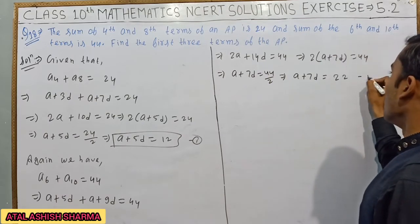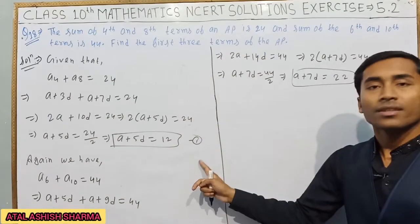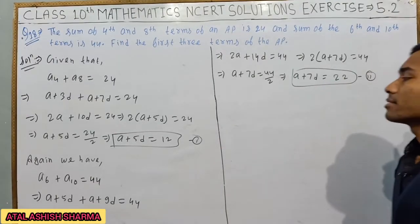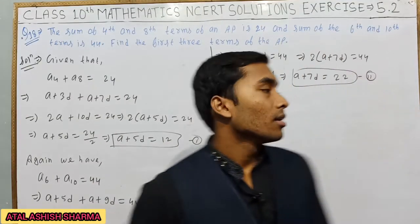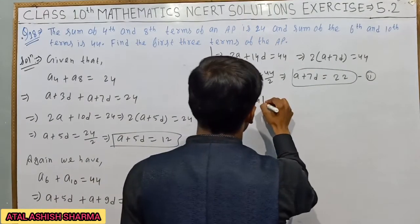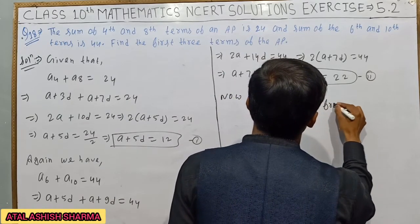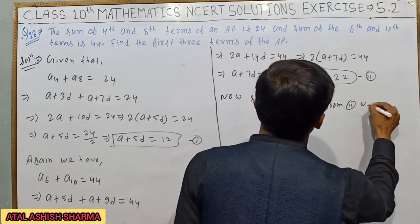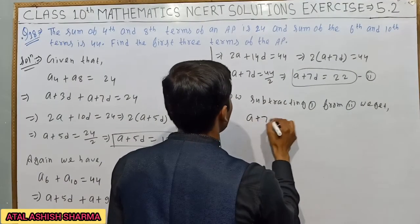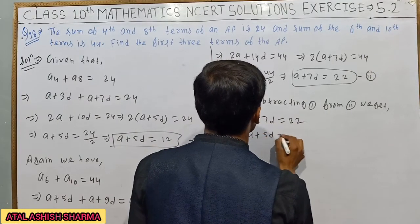Now I have to subtract the first from the second. Subtracting first from second we get a plus 7d equals 22 minus a plus 5d equals 12.